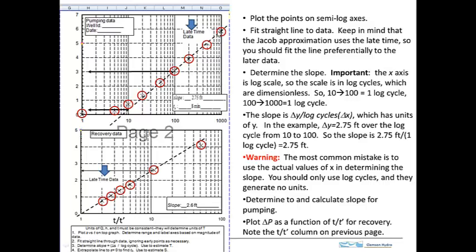So you fit the late time data. And then when you determine the slope, you determine the change in y per log cycle. So this would be the change in y shown with these heavy black lines. And the log cycle is shown here. So that would be for one log cycle. If you go up here to 1000, that's two log cycles.